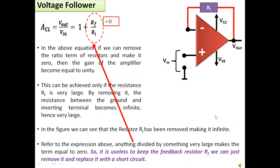Our main target would be to eliminate Ri. If we eliminate Ri, the resistance between the ground and the inverting terminal becomes infinite and the ratio term tends to 0. We can simply remove Rf and replace it with a short circuit, and hence we'll be able to remove the resistor's ratio term and the gain will be equal to 1.